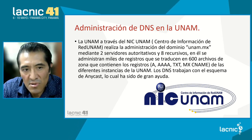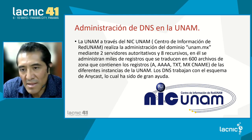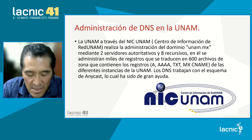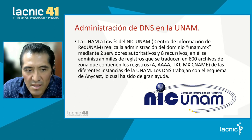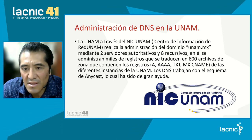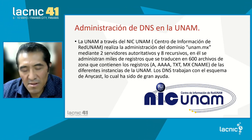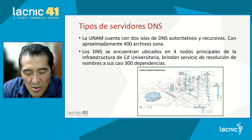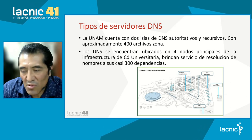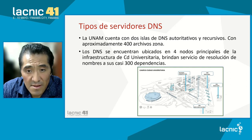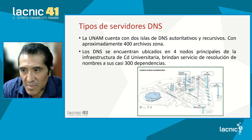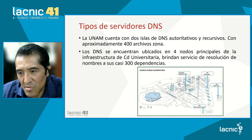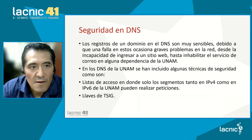There are thousands of records, introduced into 600 files in the zone that contain records A, quad A, TXT, MX, and CNAME. In the different instances of the UNAM, the most important thing is that all the DNS servers work with the Anycast scheme, which has been very helpful. These servers are located geographically and strategically in four main nodes at the university's infrastructure in order to provide services to its almost 300 departments. This is a map that shows each of the nodes where the service is located.